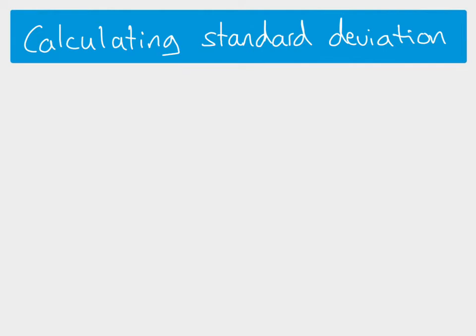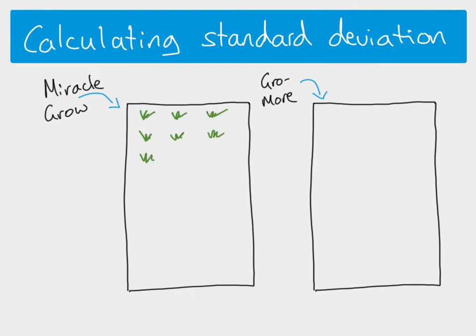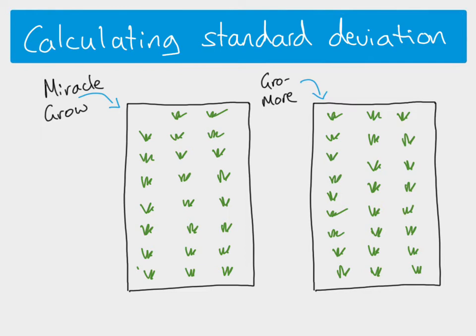To calculate standard deviation, let's use an example. Imagine we've got a farmer with a carrot farm. She has some carrots she wants to plant and wants to maximize her yield. There are two fertilizers to compare for carrot length: one field gets Miracle Grow and the other gets Grow More. She adds the fertilizers, lets the carrots grow, then measures one carrot from each field. She can see the Miracle Grow carrot is bigger, but she knows that's not necessarily representative.